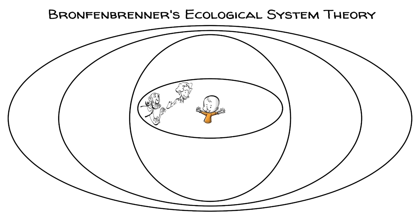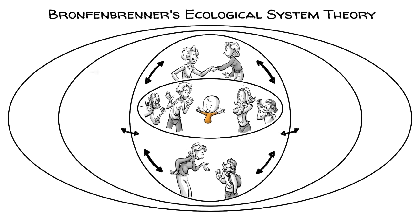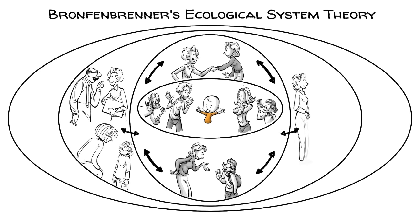First comes the microsystem of family and friends that affect the child directly. Second are the forces of the connections between the people around the child, parents with teachers and teachers with peers. Then there are links between social settings that do not directly involve the child, such as the father with his boss, the peers with their parents, and the teacher with the principal.